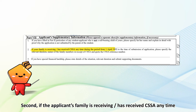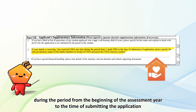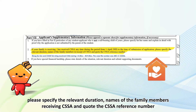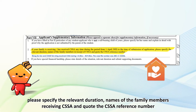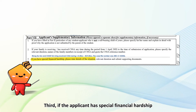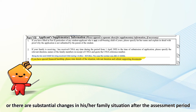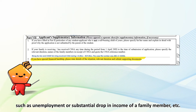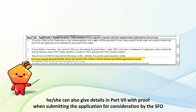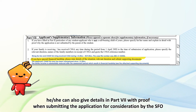Second, if the applicant's family is receiving or has received CSSA any time during the period from the beginning of the assessment year to the time of submitting the application, please specify the relevant duration, names of the family members receiving CSSA, and quote the CSSA reference number. Third, if the applicant has special financial hardship or there are substantial changes in his or her family situation after the assessment period, such as unemployment or substantial drop in income of a family member, he or she can also give details in Part 7 with proof when submitting the application for consideration by the SFO.